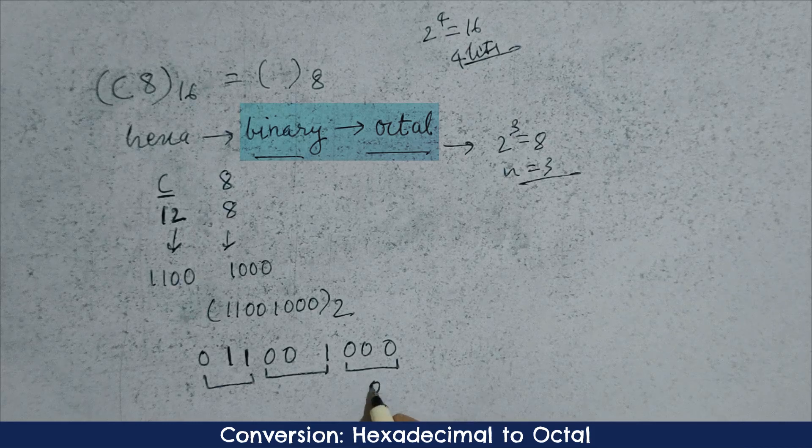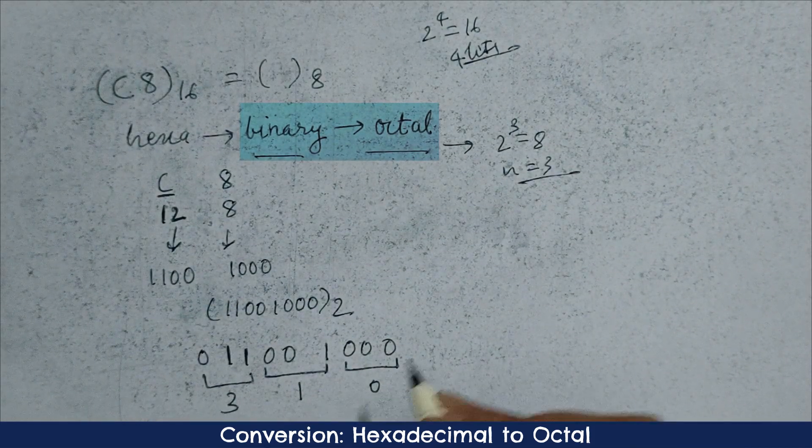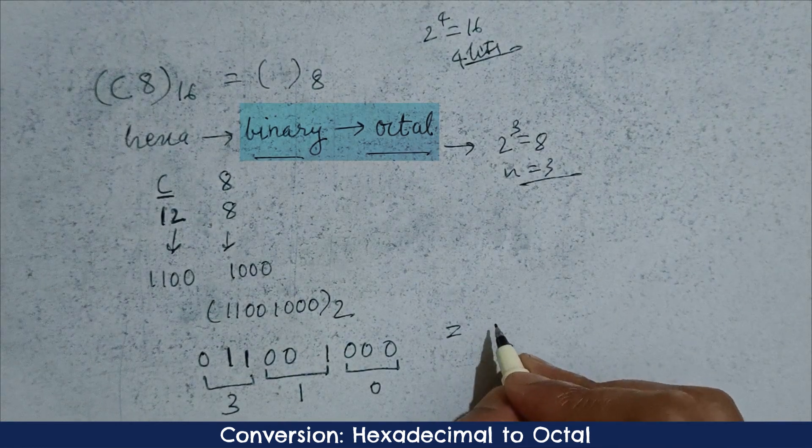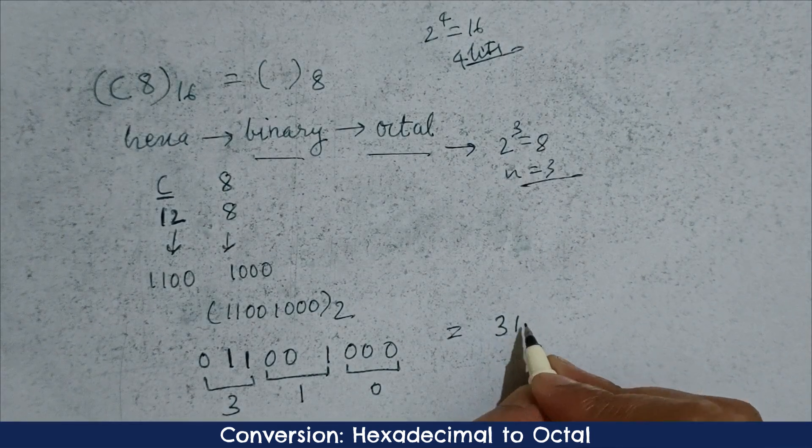The value of this group in decimal is 0, the value of this group in decimal is 1, the value of this group in decimal is 3. So, final value in octal will be 310.